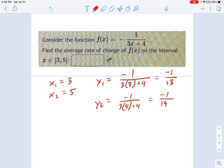So now we plug these into our formula for m, right? The slope or average rate of change is going to be equal to negative 1 over 19 minus negative 1 over 13, all divided by x2 minus x1.